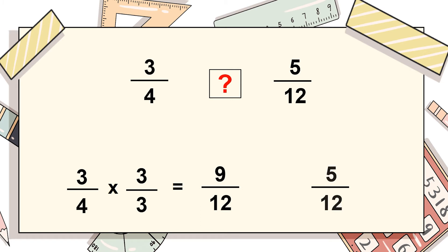The original fraction was 5/12 and the new equivalent fraction is 9/12. Now we can easily compare since the denominators are equal. In this scenario, 9/12 is larger than 5/12, so the alligator sign opens towards 9/12.